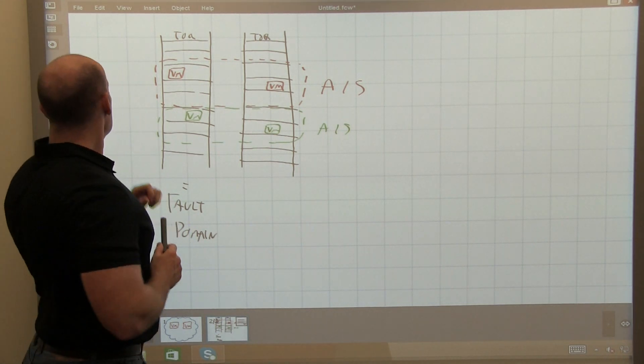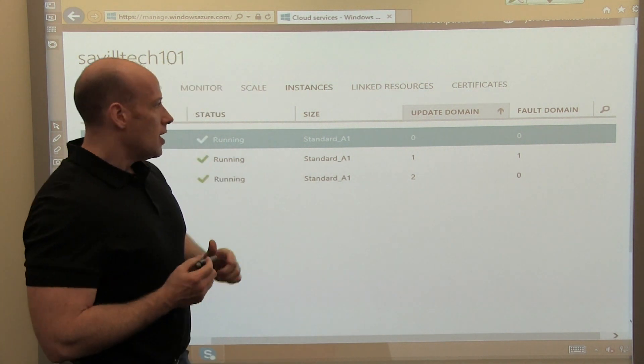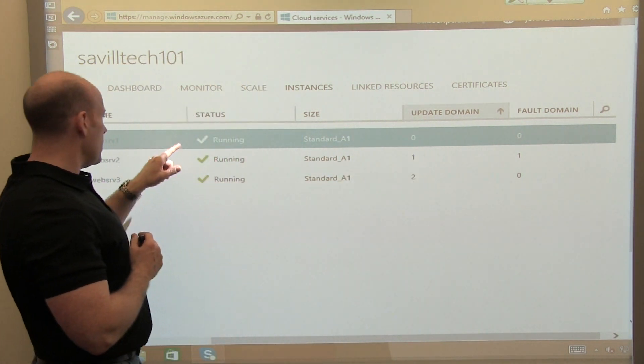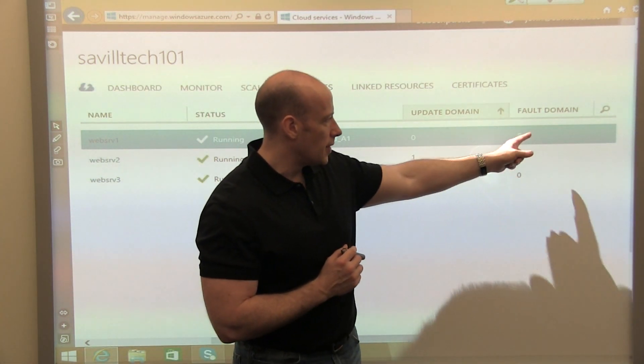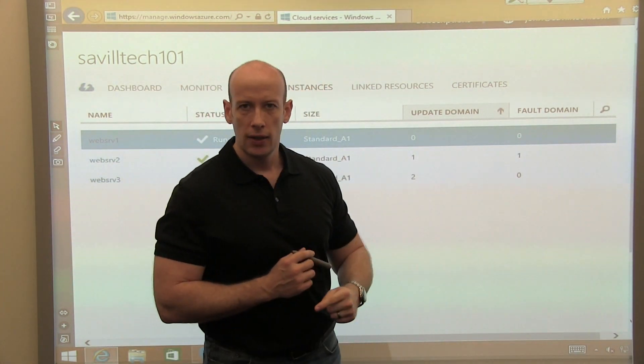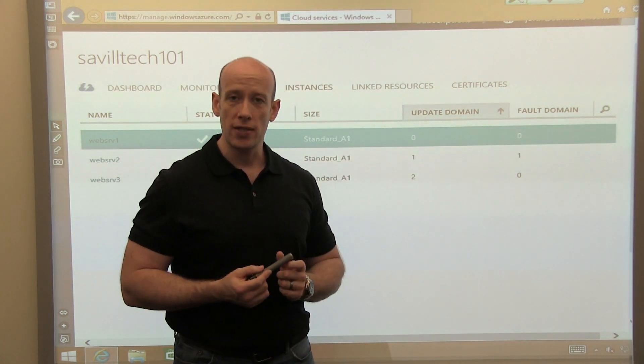And I can see that. So I have an availability set over here. And I have three instances of it. And you can see I've got my three IIS instances. And it's split over two fault domains. Fault domain 0 and fault domain 1. My third VM is back in fault domain 0. It kind of round robins how it deploys them.